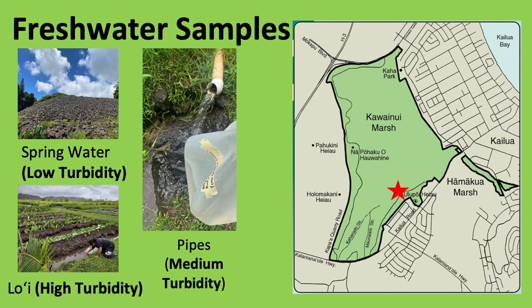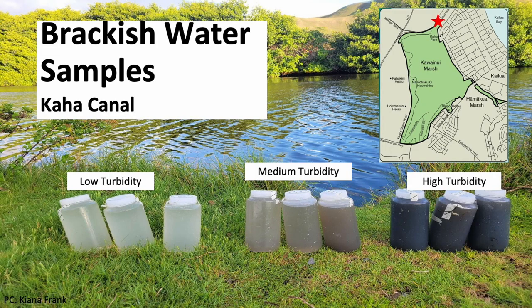Here are my freshwater samples that I collected at Ulupohele and Kawainui. The spring water was my low turbidity, the lo'i was my high turbidity, and the pipes that we use to rinse ourselves after hana is my intermediate or medium turbidity. These are my brackish water samples collected from Kaha Canal, and you can see the different levels of turbidity shown on the screen.